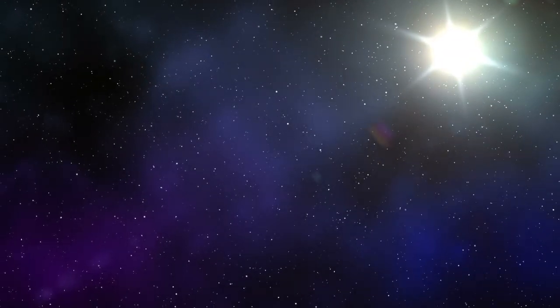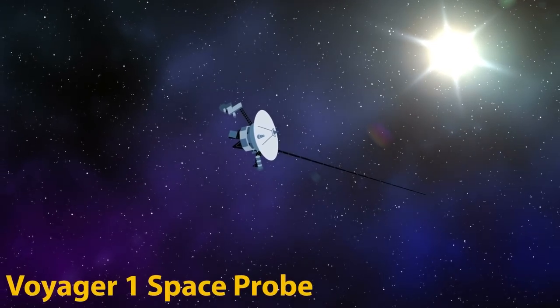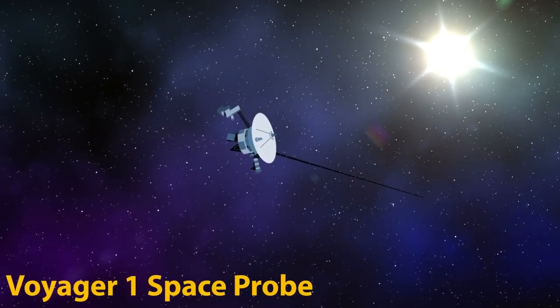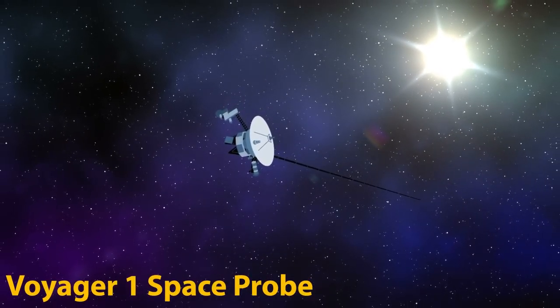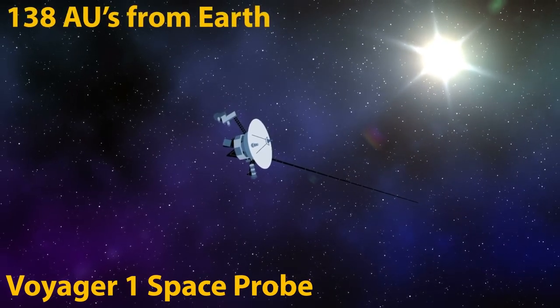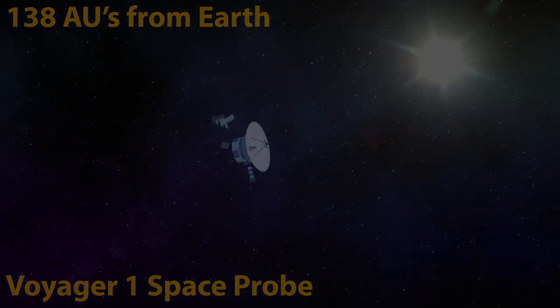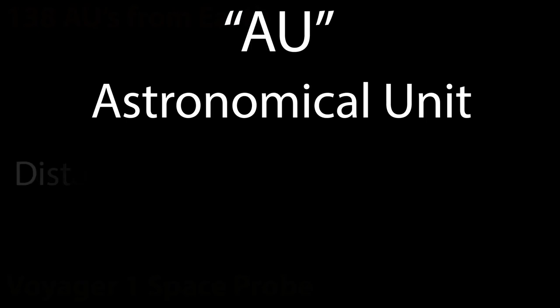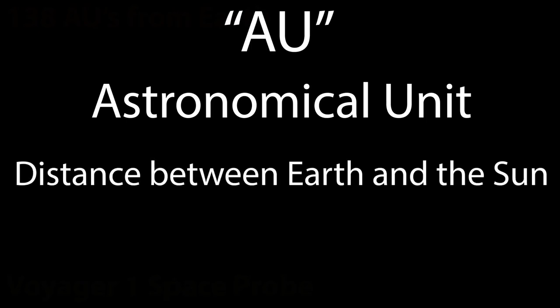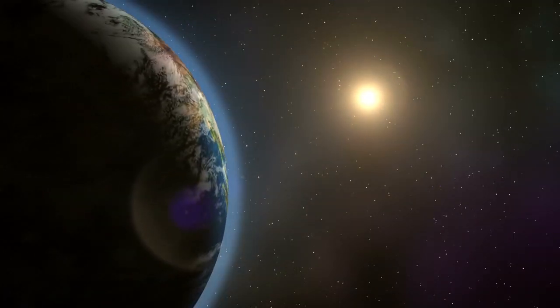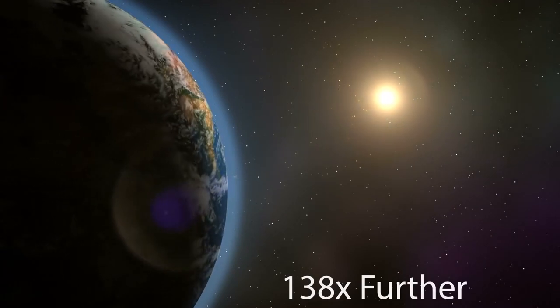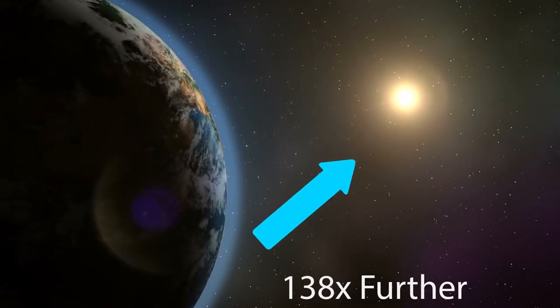When we zoom out even further away, we can find the Voyager 1 space probe, which is the furthest away man-made object from Earth. It is currently located 138 AUs from the Earth. AU meaning astronomical unit, which is the distance between the Earth and the Sun, which means that Voyager 1 is 138 times further away from us than the Sun is.